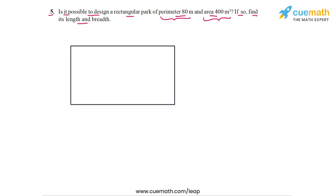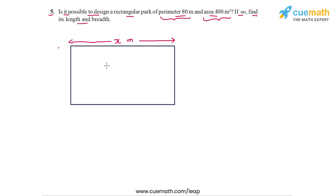Let's draw a visual to help us think. Let's suppose that this is the rectangular region, and the perimeter of this region is 80 meters. Let's take one of the dimensions of this rectangular region to be x meters — so the length of this rectangular region is x meters. Then what will be the breadth in terms of x?